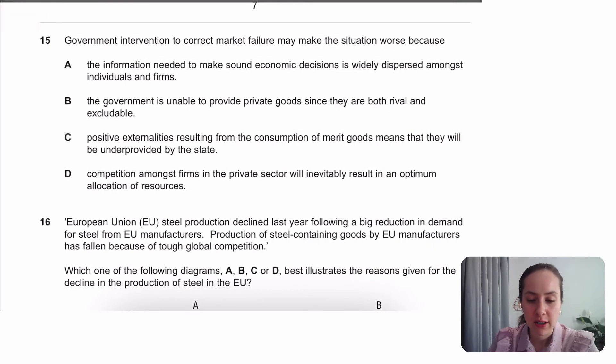Government intervention to correct market failure may make situations worse. So this is looking at government failure. Government failure happens when the welfare loss has actually gotten worse now that the government intervention has occurred. A is a strange way of phrasing something called information failure. And what this means is the government is misinformed about something. They think something's good and they try and increase the production. It actually turns out being bad. That's obviously going to decrease welfare. So that's the answer.